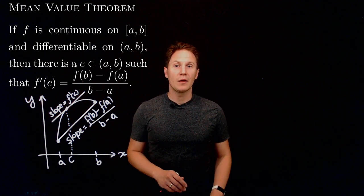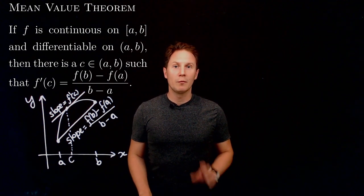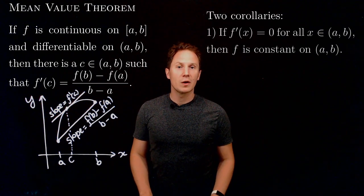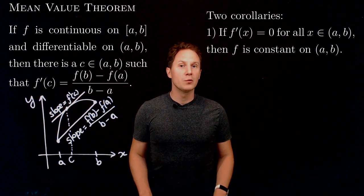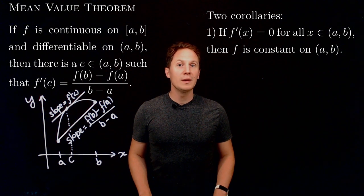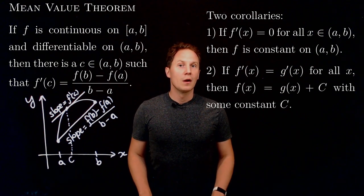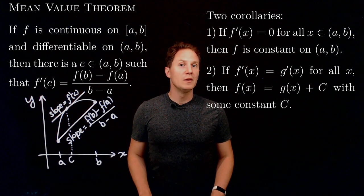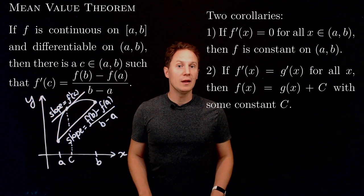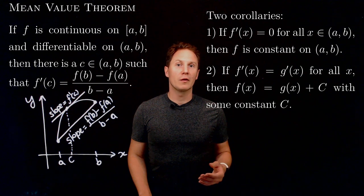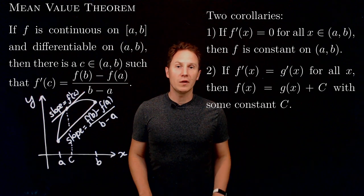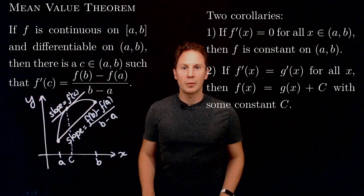The mean value theorem has many important consequences; I'll mention two. First, if a function's derivative is zero at all points in an open interval, then the function must be constant on that interval. A consequence of this is that if two functions have equal derivatives for all x, then the two functions differ by only a constant: if f'(x) equals g'(x) for all x, then f(x) must equal g(x) plus a constant c.